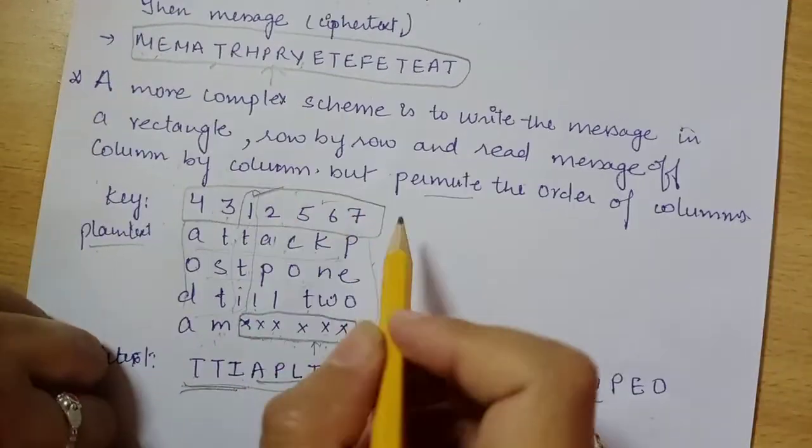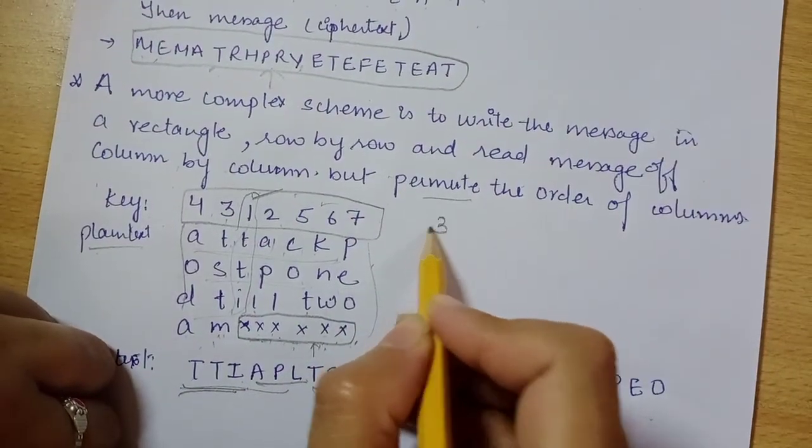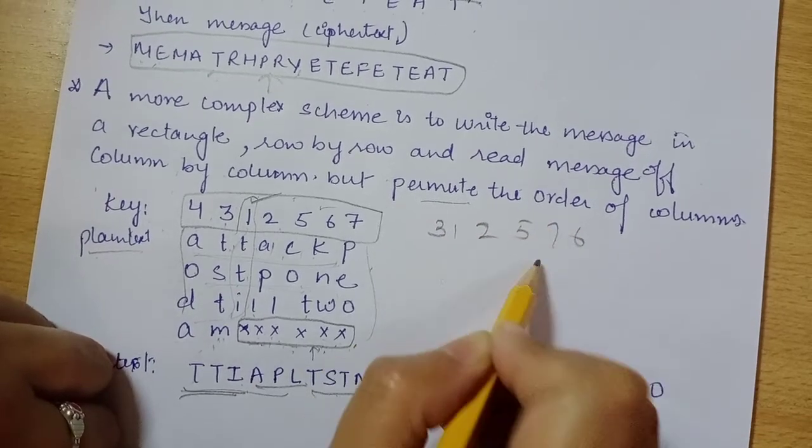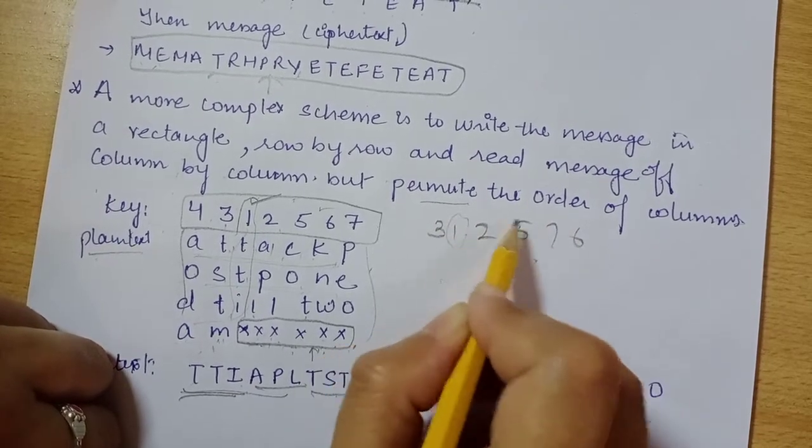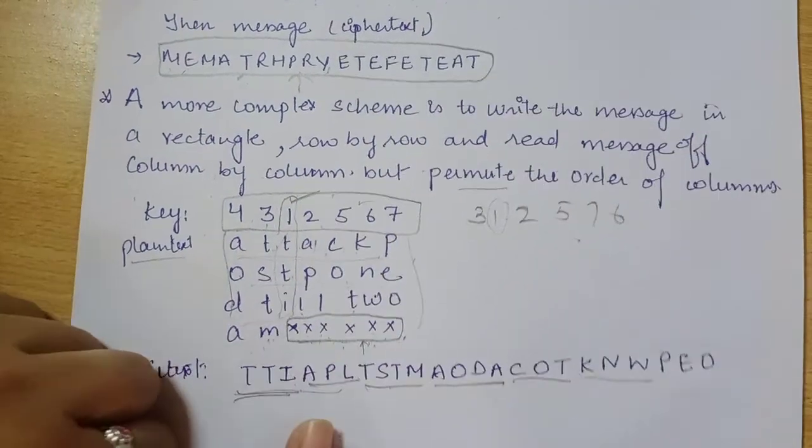For example, let's say the key will become 3, 1, 2, 5, 7, 6. So we have to read column by column. So this technique is better as compared to the rail fence.